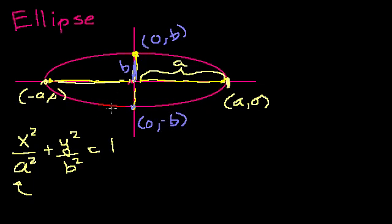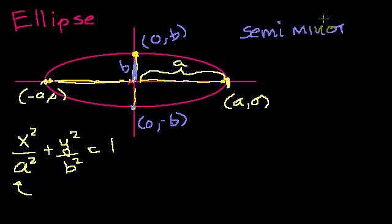The way I drew this, we have a short and fat ellipse. You can also have a tall and skinny ellipse. In the short and fat ellipse, the shorter direction is called the minor axis, and b is the length of the semi-minor axis. It's called minor because it's the shortest of all the diameters of the ellipse, and semi means half of that.